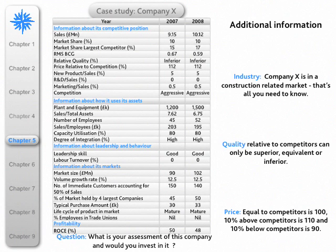Quality is always assessed relative to competitors and it can only be one of three things: superior, equivalent, or inferior. And finally, additional information about price. If Company X's price is more or less equal to its competitors, it is 100. If it's 10% above its competitors, it's 110. And if it's 10% below its competitors, it is 90. So you have to make a strategic analysis of that company and decide whether or not you would be an investor in it.